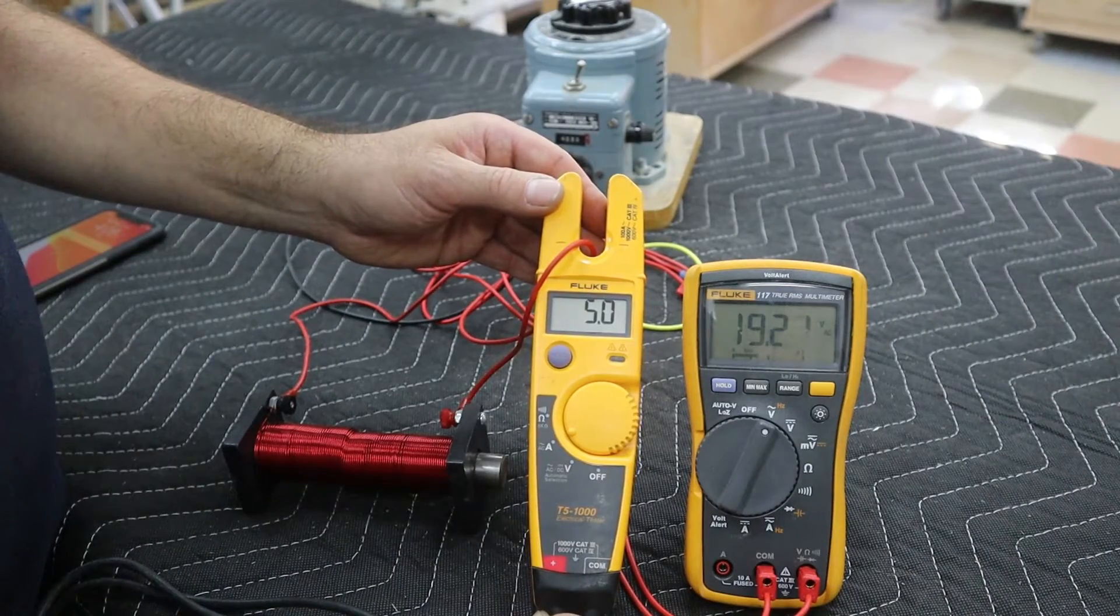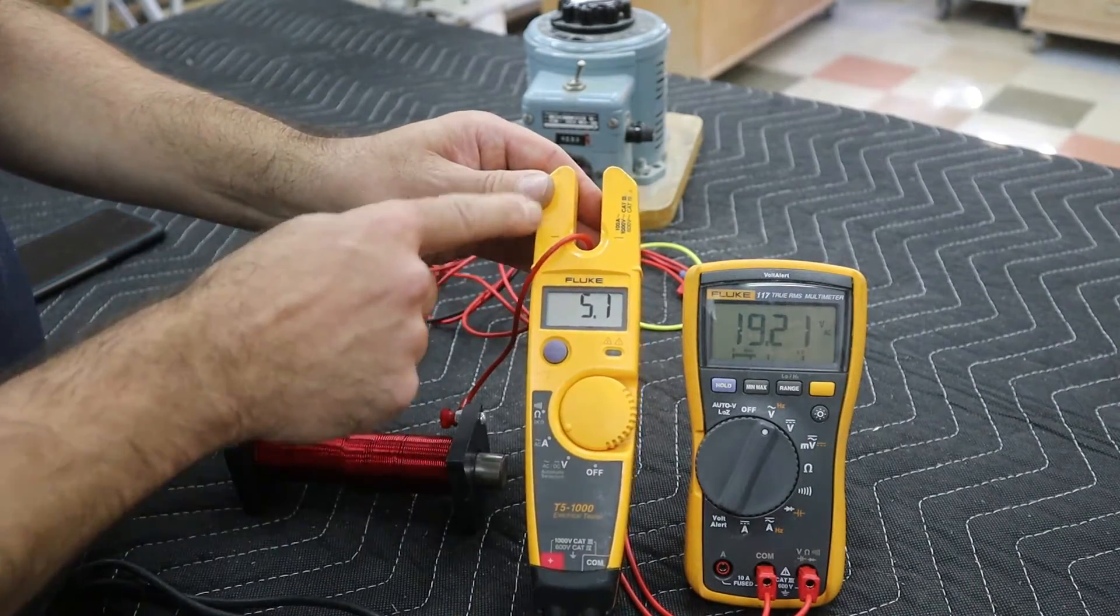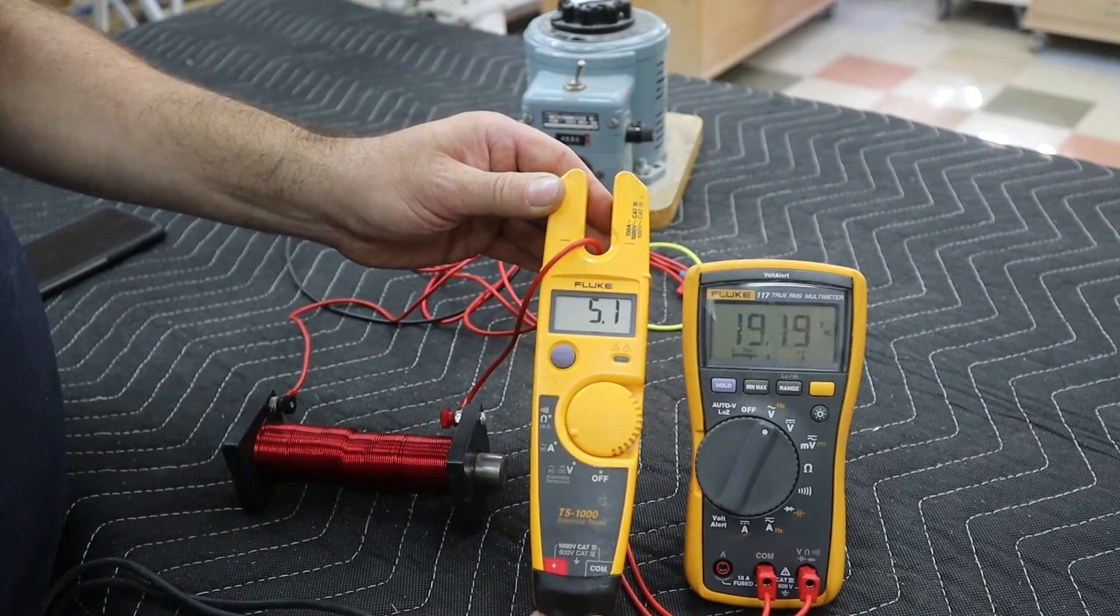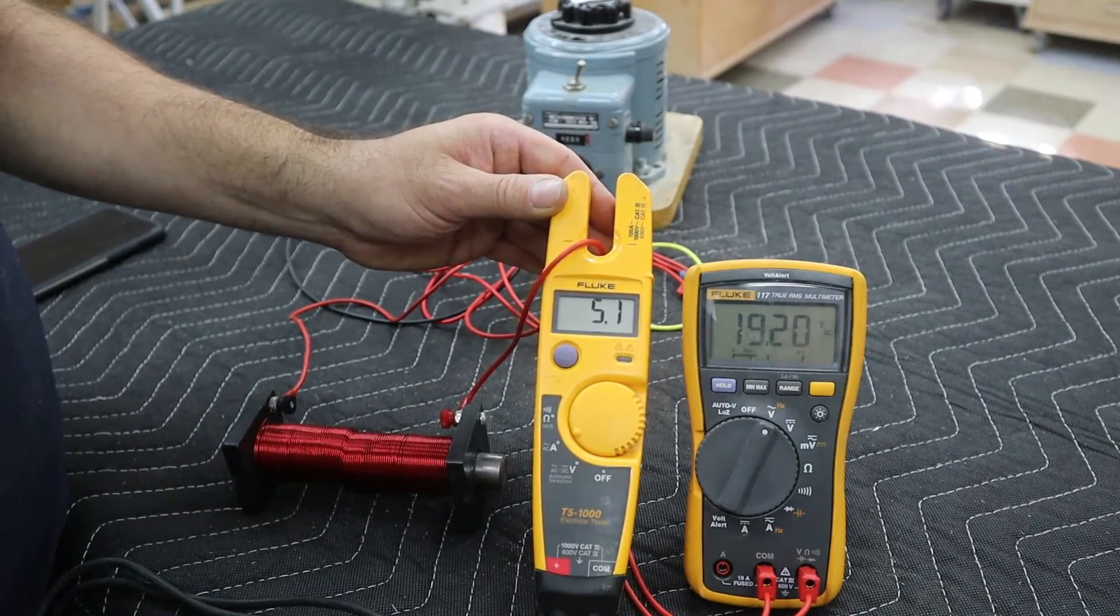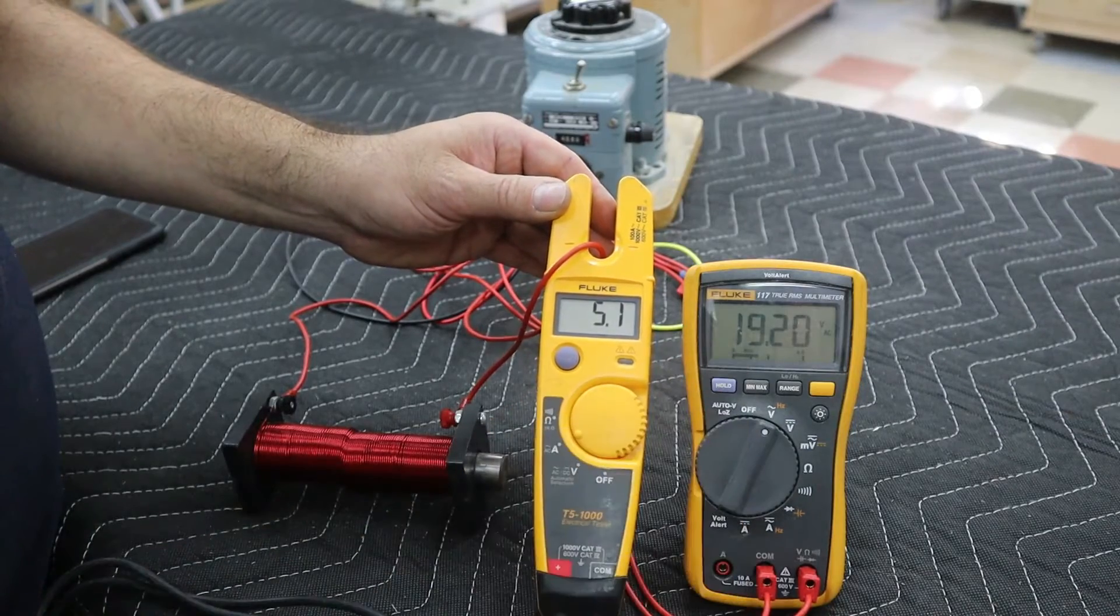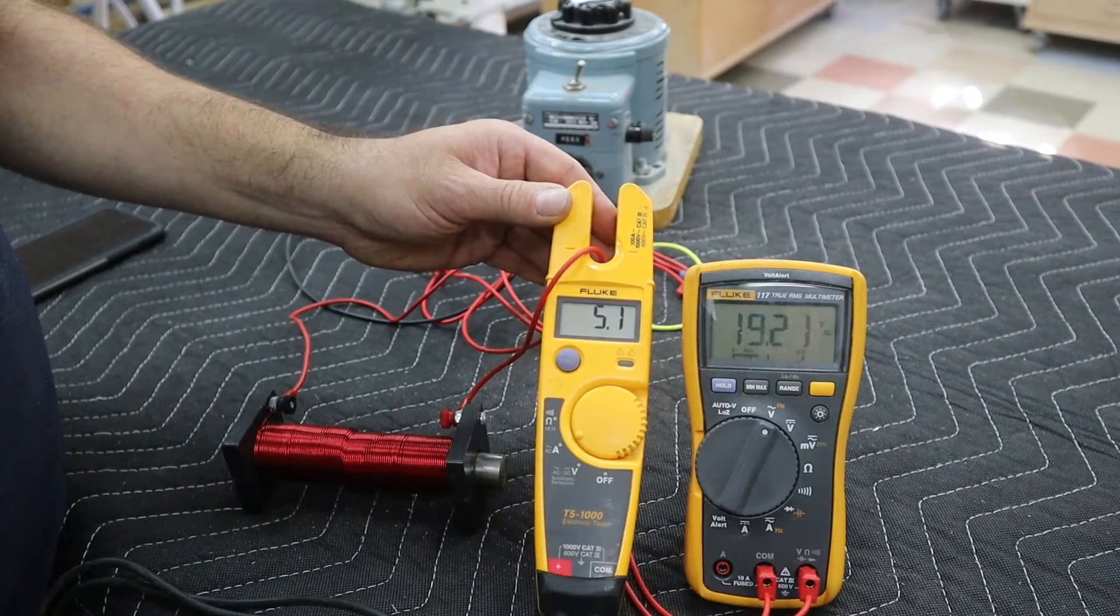While we're waiting, I'm also taking a current reading with my open jaw meter and we can see that we're drawing approximately five amps of current at about 19 or 20 volts.